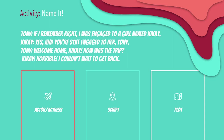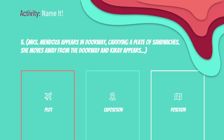Number four — Tony: 'If I remember right, I was engaged to a girl named Kikai.' Kikai: 'Yes, and you're still engaged to her, Tony.' Tony: 'Welcome home, Kikai. How was the trip?' Kikai: 'Horrible. I couldn't wait to get back.' What part of the play is this? The answer is script. Number five: 'Mrs. Mendoza appears in the doorway carrying a plate of sandwiches. She moves away from the doorway and Kikai appears.' What part of the play is this? The answer is position.